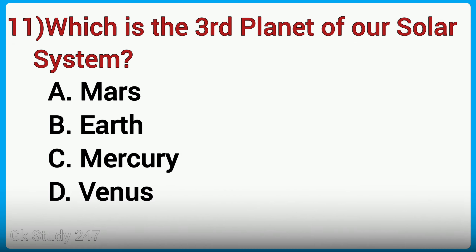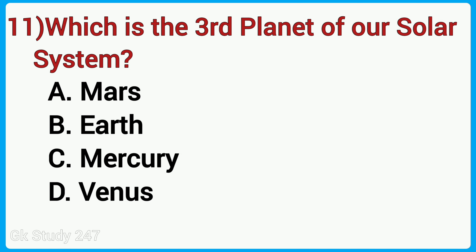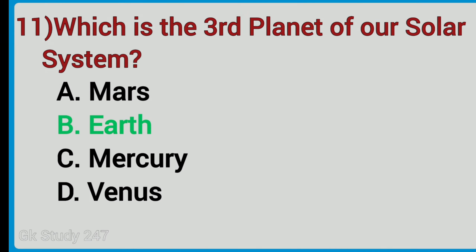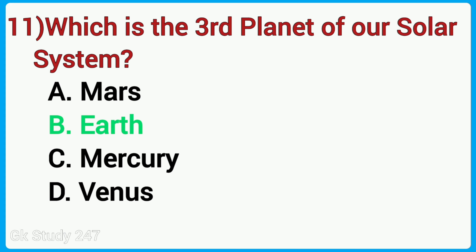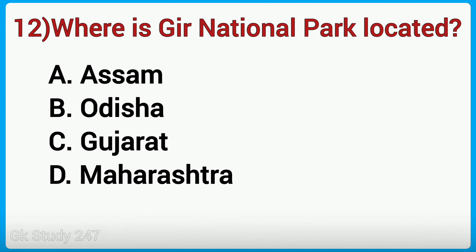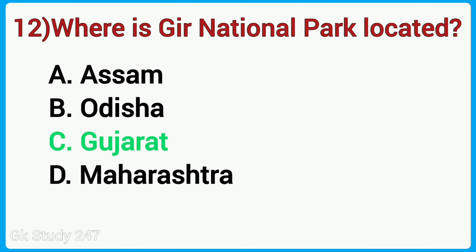Which is the third planet of our solar system? Answer is Earth. Where is Gir National Park located? Answer is Gujarat.